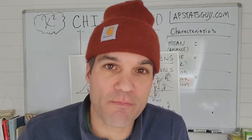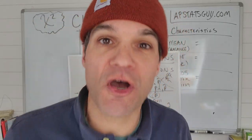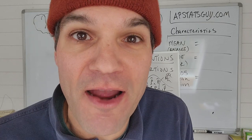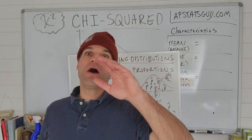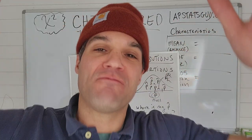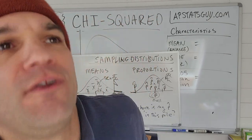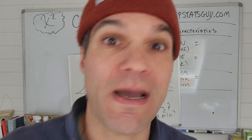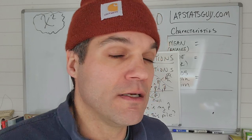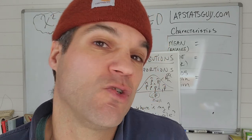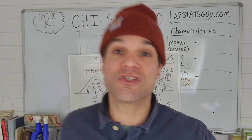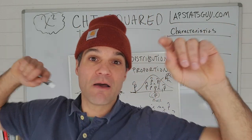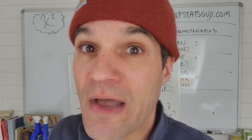Hello, APStatsGuy here, back in front of the whiteboard to talk about chi-squared models. What are chi-squared models? Where do they come from? What are the interesting characteristics of the chi-squared distribution? We're going to talk about those things, how you can actually create a chi-squared by hand with beads, or create a chi-squared with a random normal z-score generator. But before we go into what a chi-squared distribution is, we have to go back and think about a couple sampling distributions that we learned how to make.